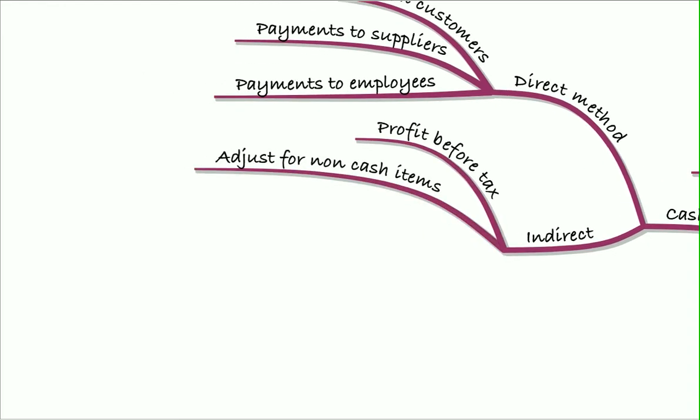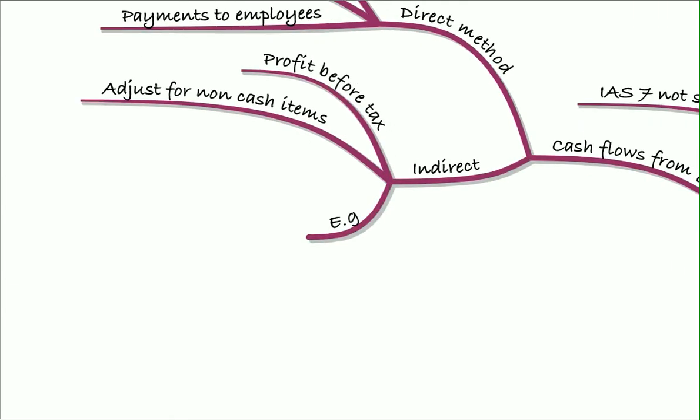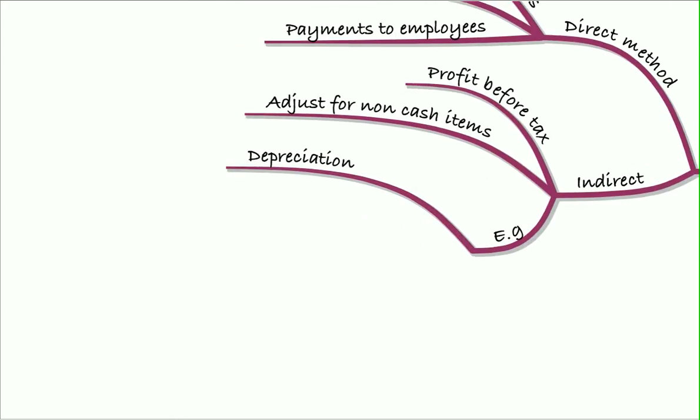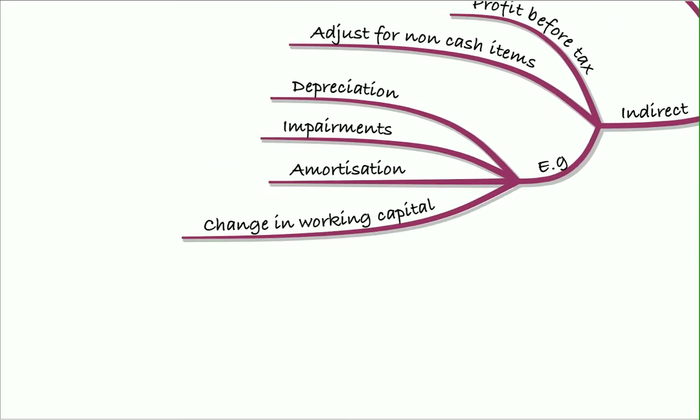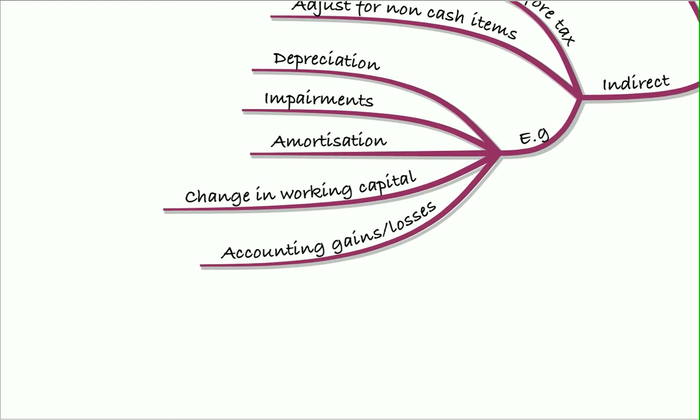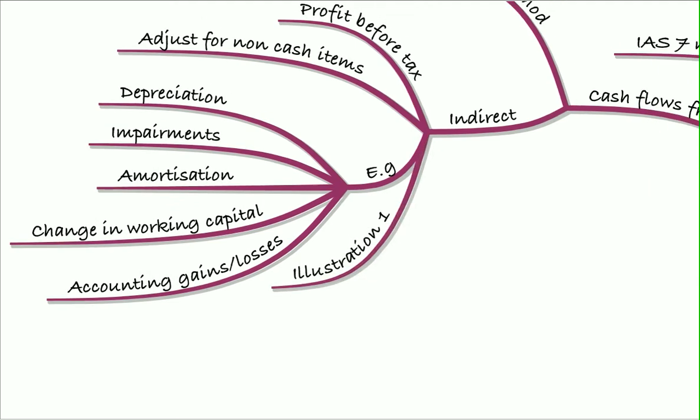It adjusts for non-cash items to reconcile to cash from operating activities. We start with profit before tax and add back depreciation, impairments, and amortization. We adjust for the change in working capital. Remember accounting gains and losses—if they're losses, we add them back; if they're gains, we subtract them out. That gives us our cash flows from operating activities, and we did that in illustration one.